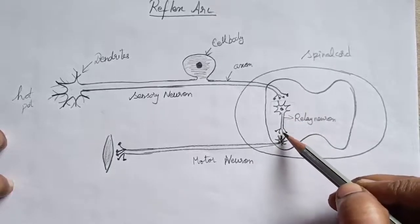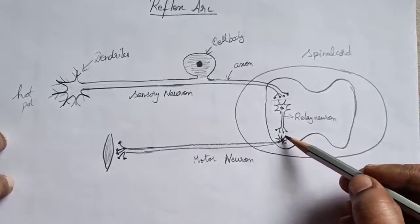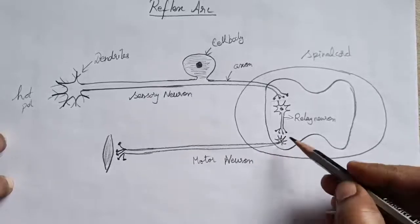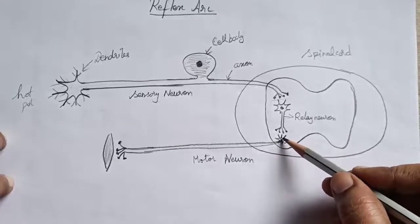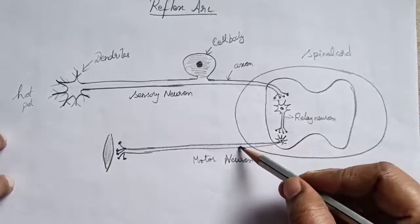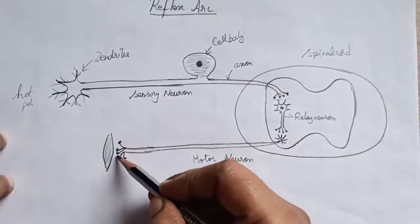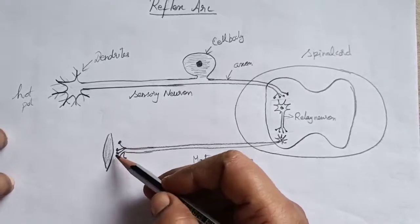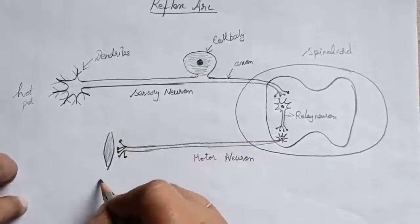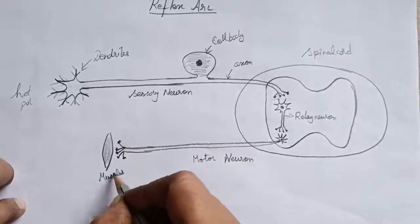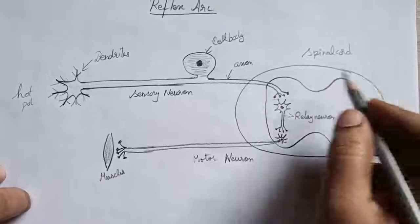From the relay neuron's axon ending, electrical impulses stop and a chemical is released at another synapse. This chemical reaches the dendrites of the motor neuron, where it is converted back into electrical impulses. From the motor neuron's cell body, the impulse passes through the axon to the axon ending, where a chemical is released that contracts the muscle, causing you to pull your hand away from the hot part immediately.